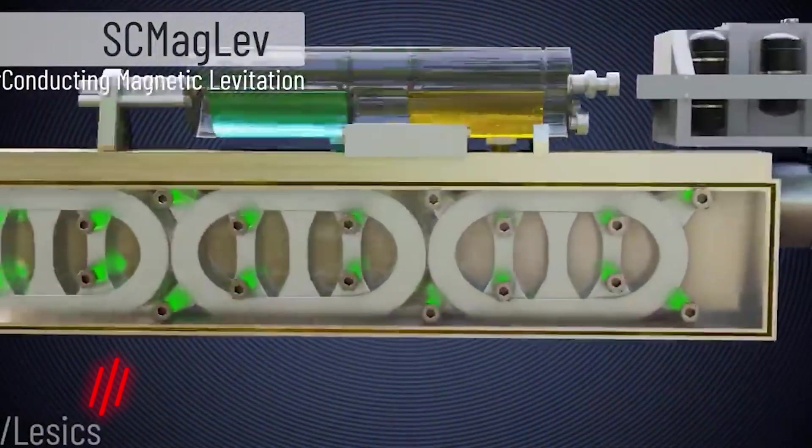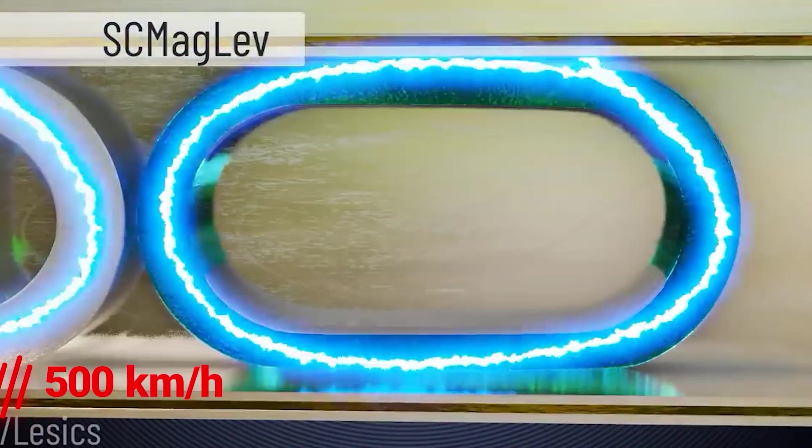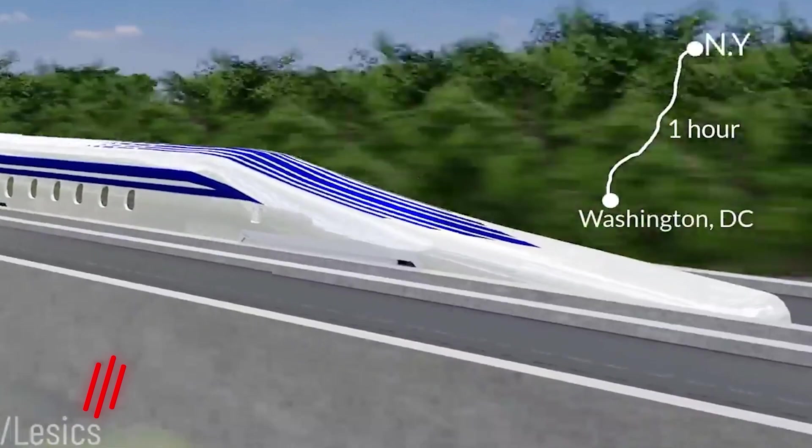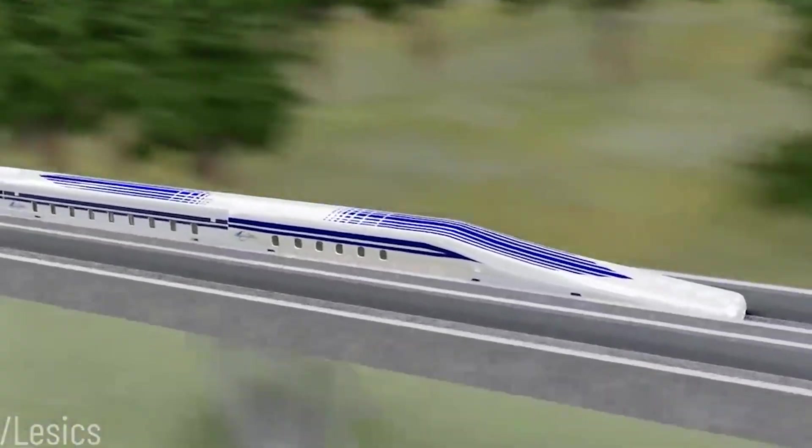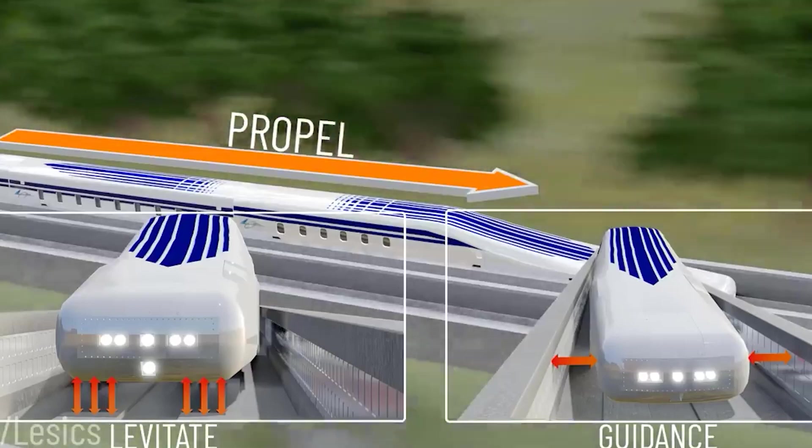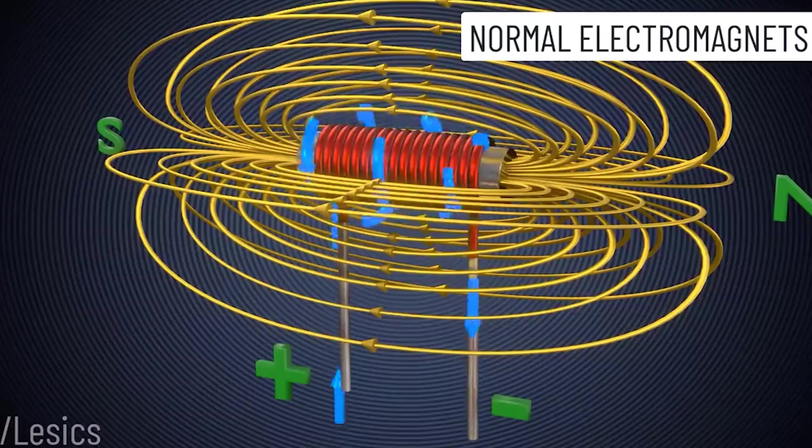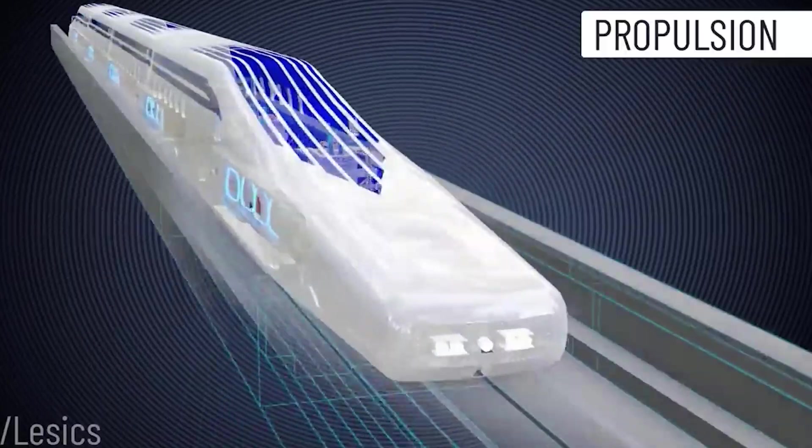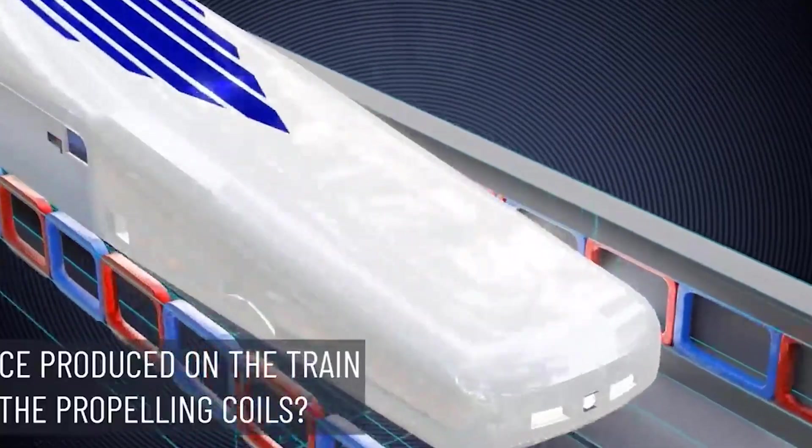Maglev trains are able to reach speeds of up to 500 kilometers an hour or more, and they are used for both passenger and freight transportation. They are considered to be a promising technology for the future of transportation due to their high speeds and potential to reduce emissions and congestion on roads and highways.